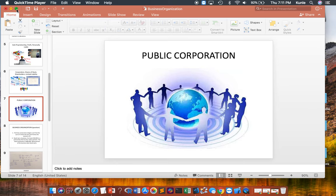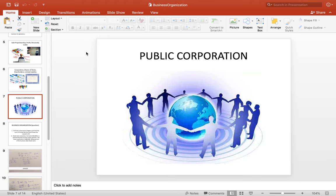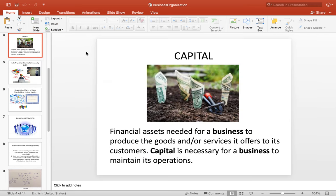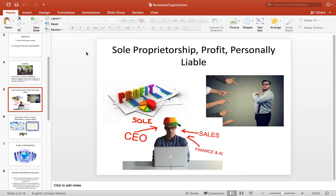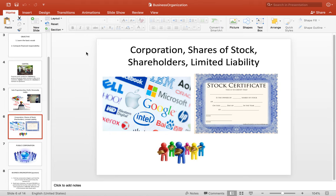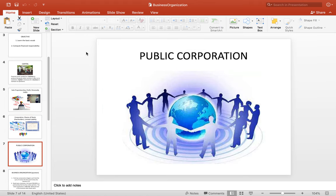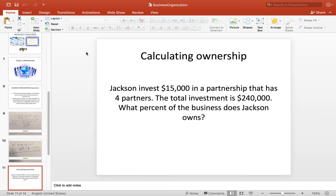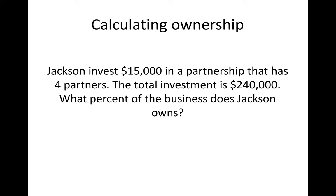I'm going to continue from where we left off last time when we spoke about some important terms in personal finance. We talked about capital, sole proprietorship, profit, personal liability, corporation, shares of stock, shareholders, limited liability, private and public corporation. We did a few questions and I showed you how to solve them. Today I'm going to go over a few more questions that I believe would help you better understand the math that goes with personal finance, which we call financial algebra.